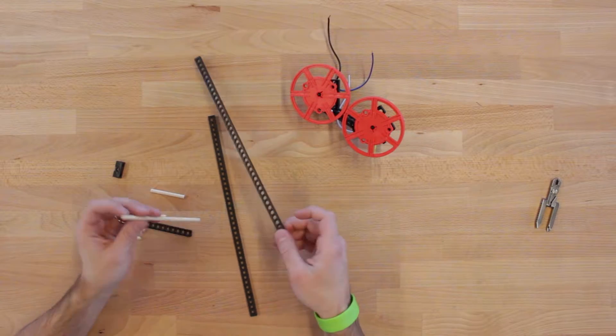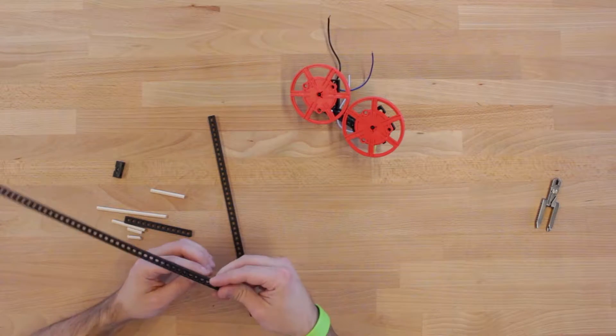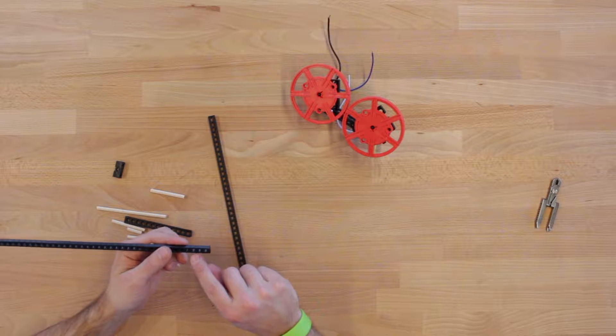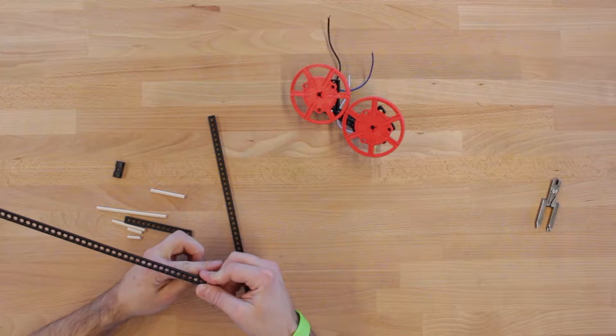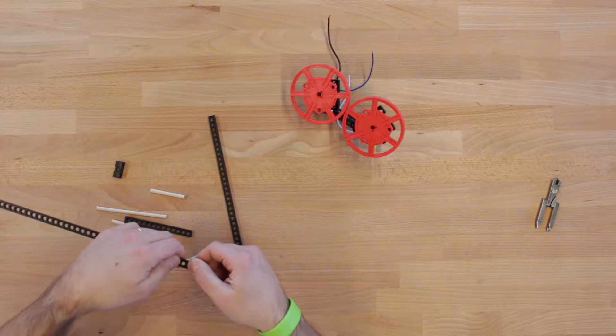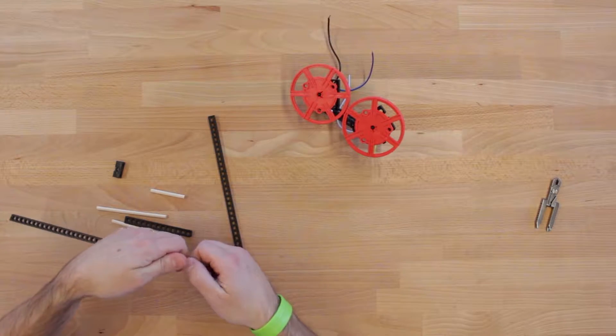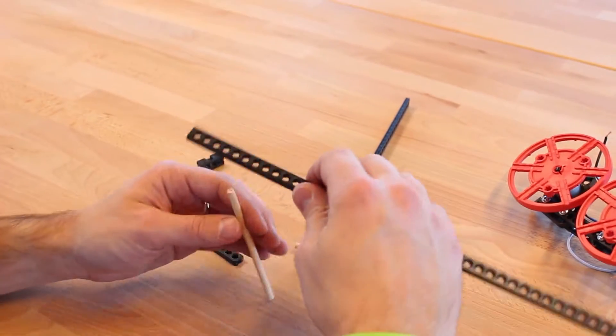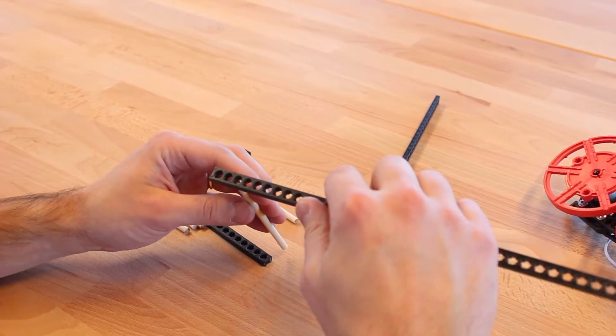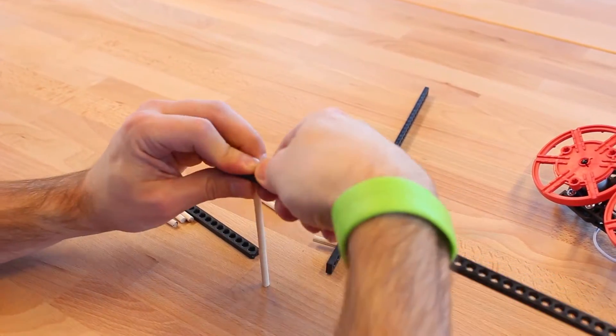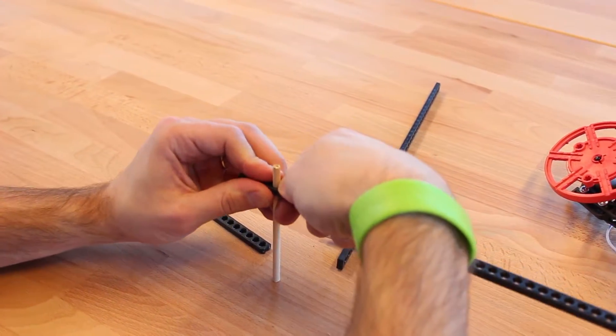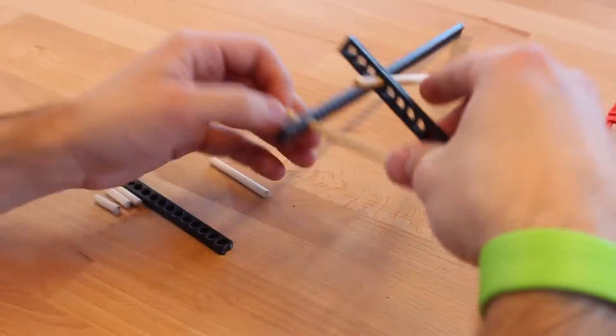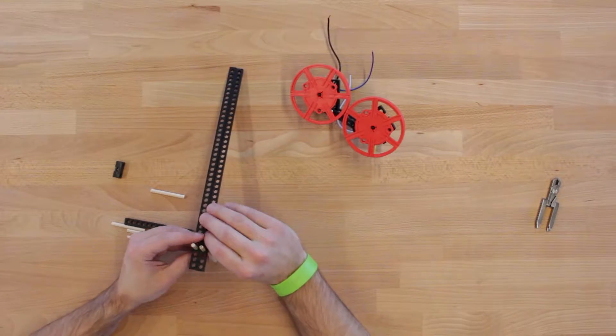Now take one of your long black plates and one of your three-inch dowels and install it one, two, three, four holes over from the end. Push it on until it sticks through about an inch or so. And then repeat that for the other black plate and your other three-inch dowel. Hold them up and check to make sure they're roughly the same.